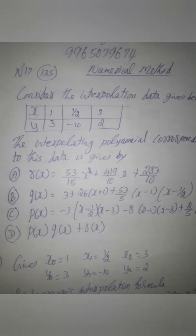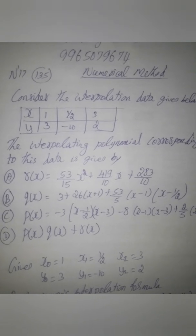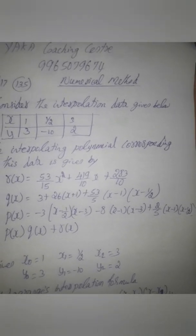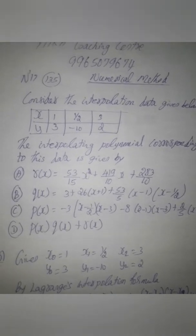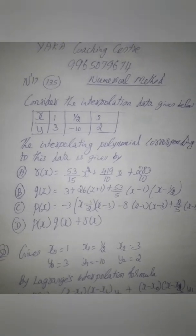P of x equals minus 3 bracket x minus 1/2, x minus 3, minus 8, x minus 1, x minus 3, plus 2 by 5, x minus 1, x minus 1 by 2. Fourth option: P of x, Q of x plus R of x. You have two marks.